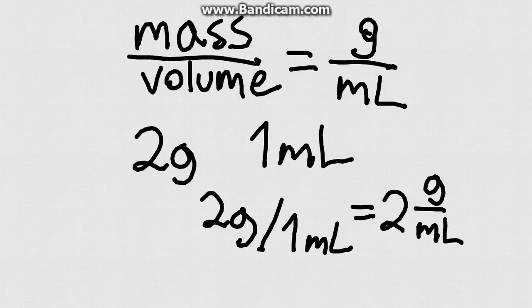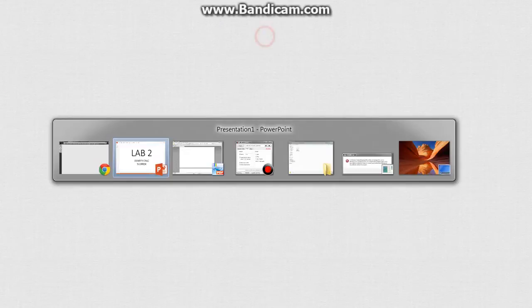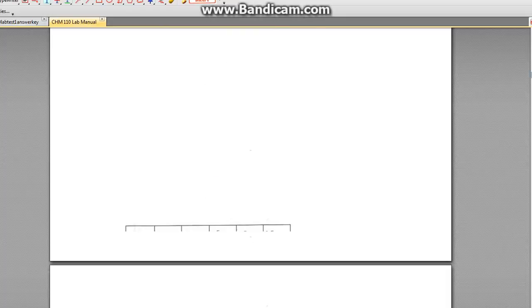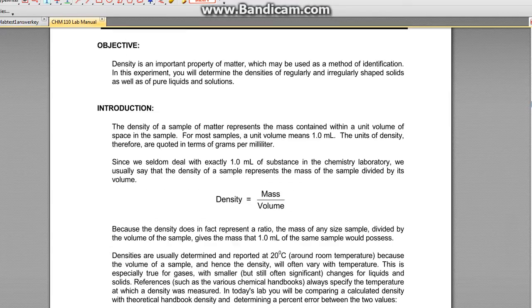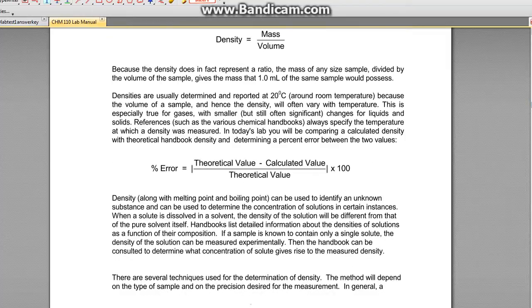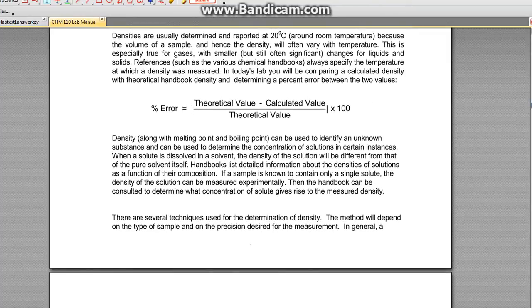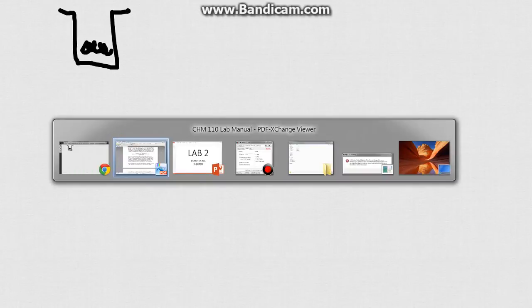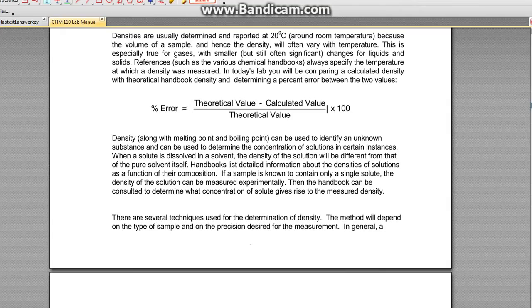You also need to know how to do the percent error calculation. If you go into the lab manual, lab two, it has a nice equation in here for both density and calculating the percent error. In calculating the percent error, what you have to do is take your theoretical value and subtract your calculated value and divide by your theoretical value, and it's important that you note that this is in absolute value.